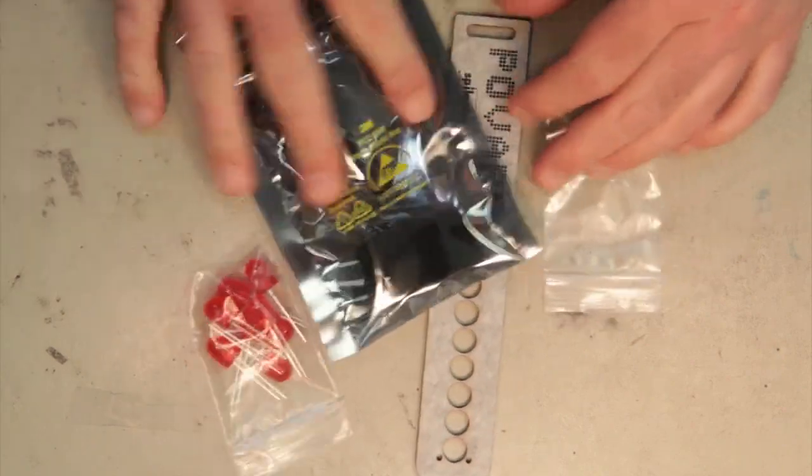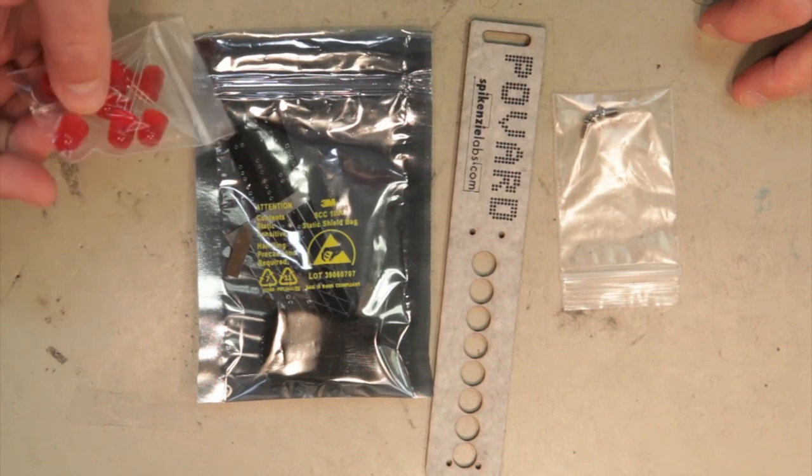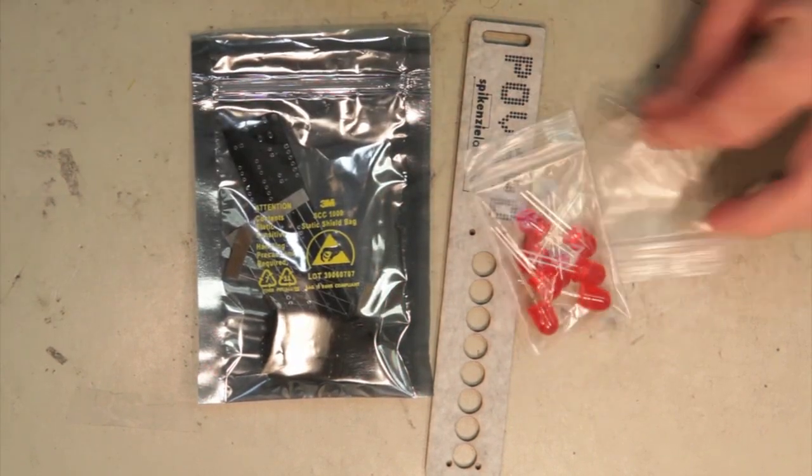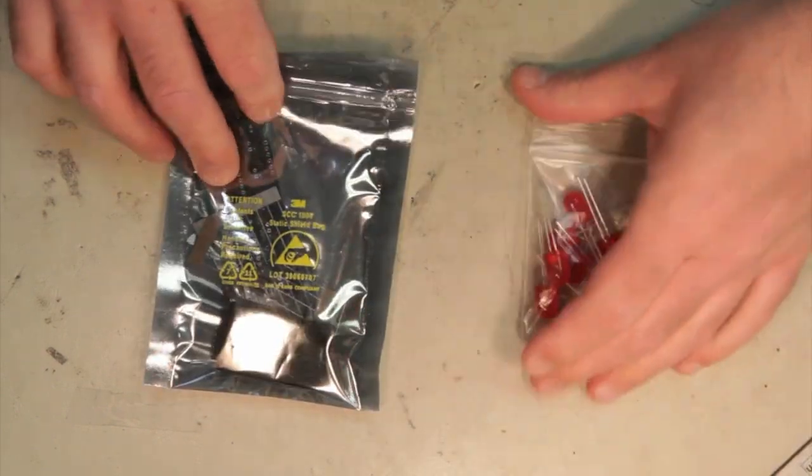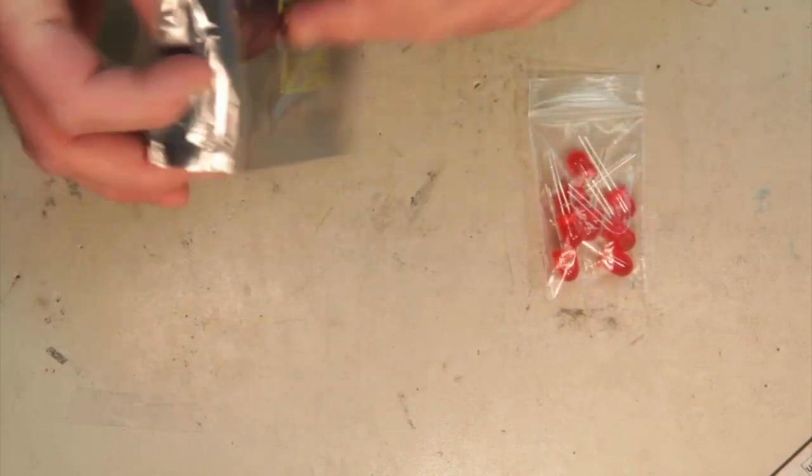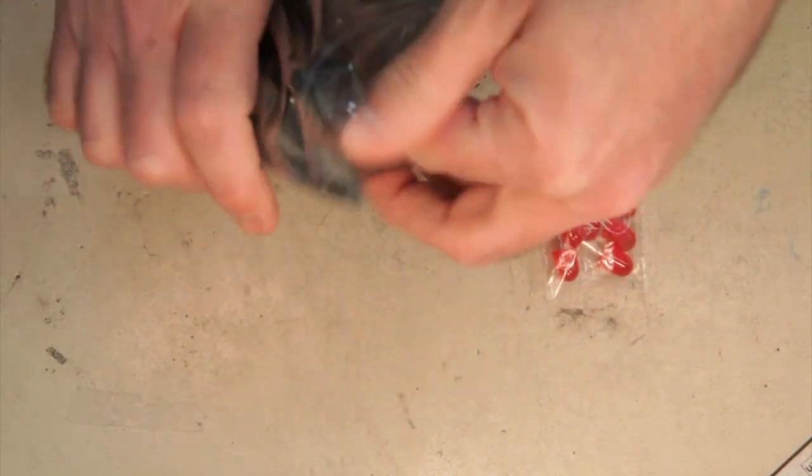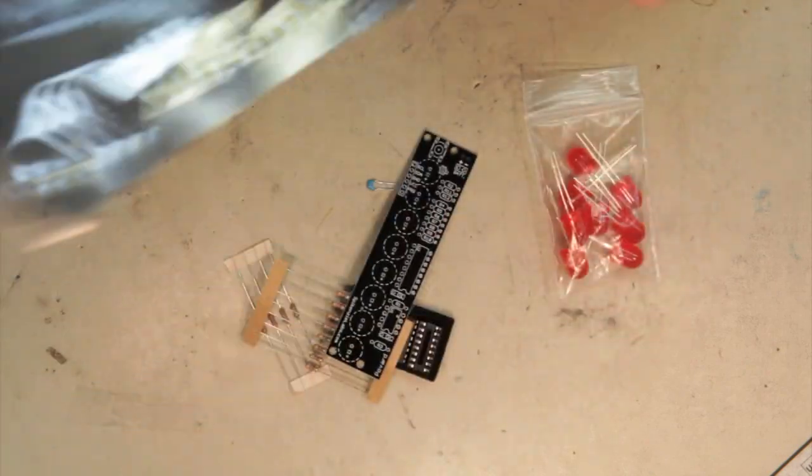Here's the Povard anti-static bag containing the anti-static sensitive parts, including the PCB. We have a little bag of LEDs and some screws. I'm going to set aside the screws and the bezel for now. We're going to open up the anti-static bag and dump out the contents. There's not that much in it. Very easy kit to build.